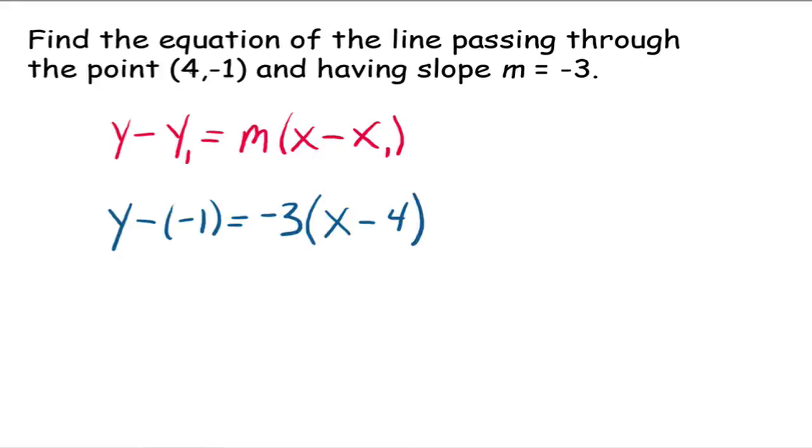Everybody see that? We took the 4, plugged it in for x1. We took the negative 1, plugged it in for the y1. Notice now we have to write it as y minus y1, which then goes to y plus 1. And then distributing this out over here, we get negative 3x plus 12.